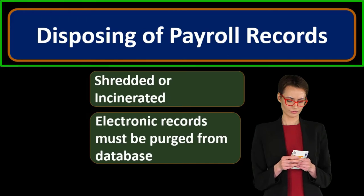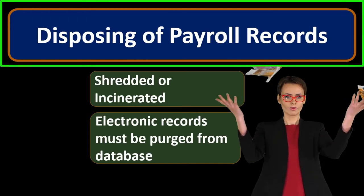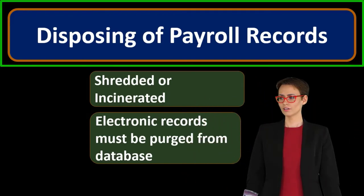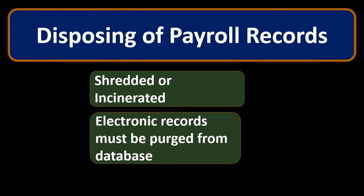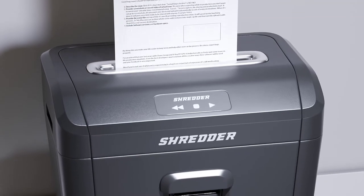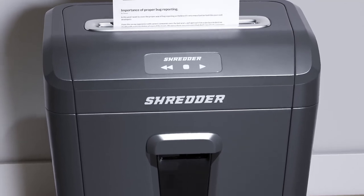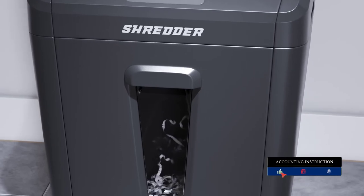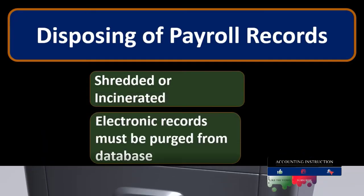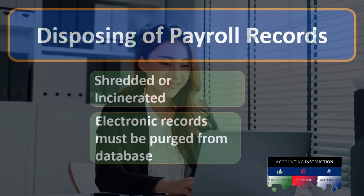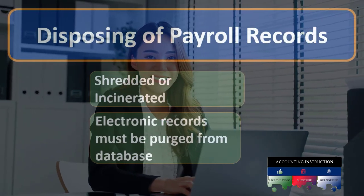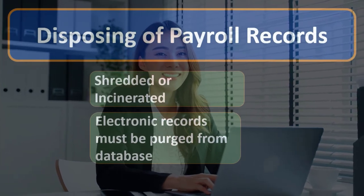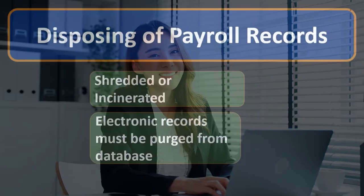When disposing of payroll records, we want to do so in a safe and secure way, which typically includes shredding or incinerating them to ensure that sensitive payroll information — including social security numbers and other sensitive data — cannot be used against employees or in a harmful way. If the information is in a database program, we want to make sure we have fully purged the database so that sensitive information cannot be stolen.